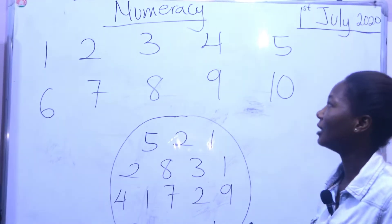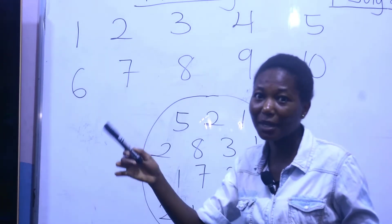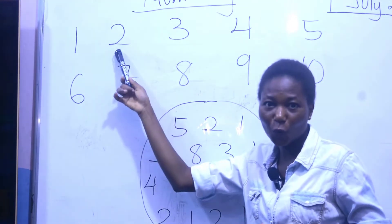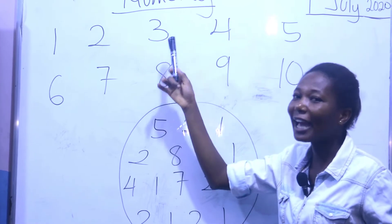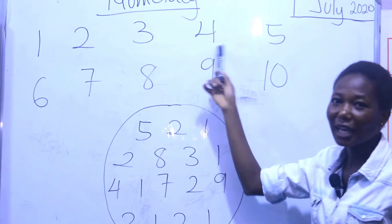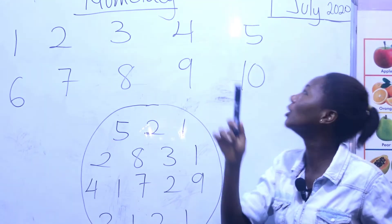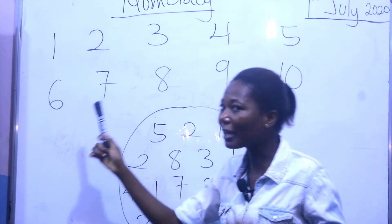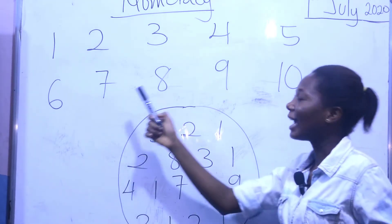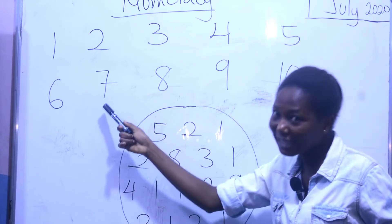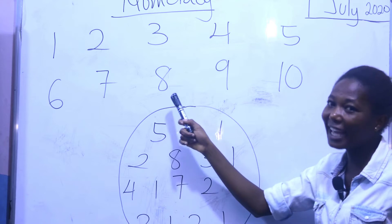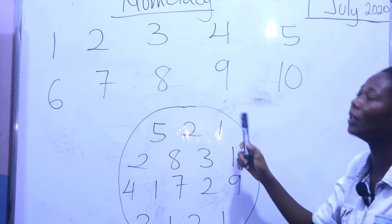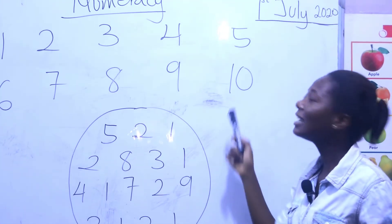Now let's start. Repeat after me: one — very good. Two — again, two. Three — let me hear you, three — very good. Four — again, four — very good. Five — again, five — good. Six — seven — again, seven. Eight — again, eight — very good. Nine — let me hear you, nine — very good. Ten — again, ten — very good!